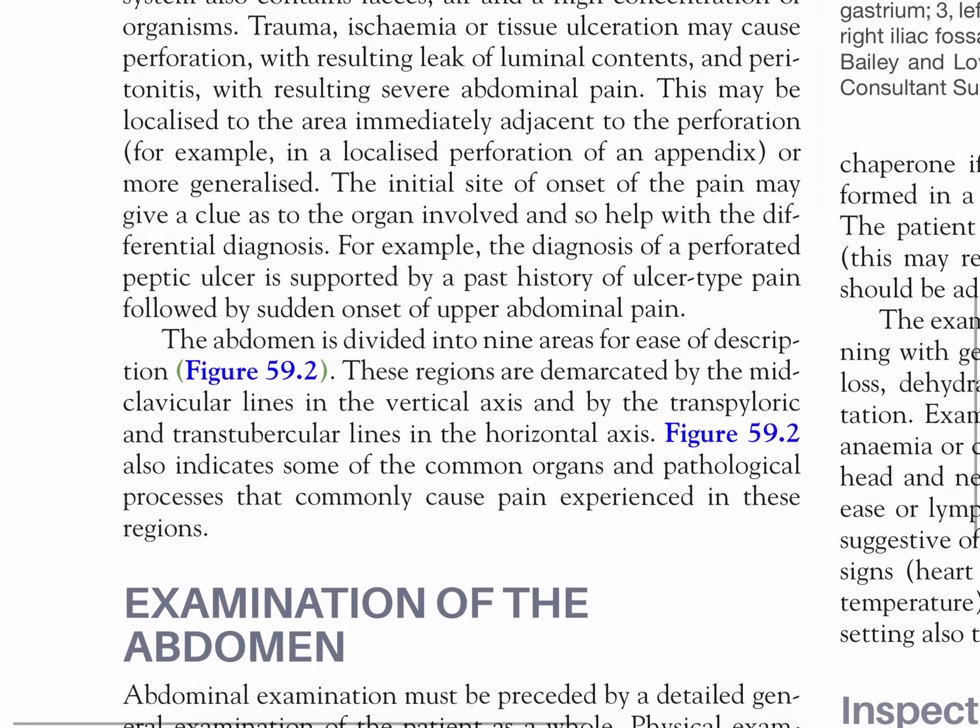The abdomen is divided into 9 areas for ease of description. The regions are demarcated by the mid-clavicular lines in the vertical axis and by the transpyloric and transtubercular lines in the horizontal axis. This also indicates some of the common organs and pathological processes that commonly cause pain experienced in these regions.